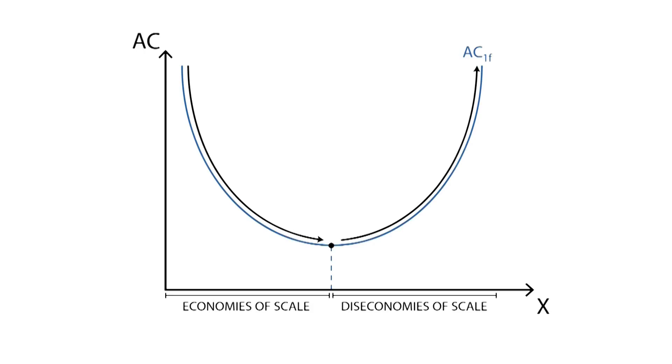If market demand were to be equal to D1, the firm would profit from economies of scale, and therefore would be able to supply the market. However, if total demand were to grow beyond a certain point, to D2 or D3, the firm would start to suffer from diseconomies of scale.